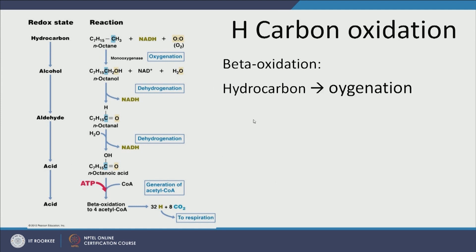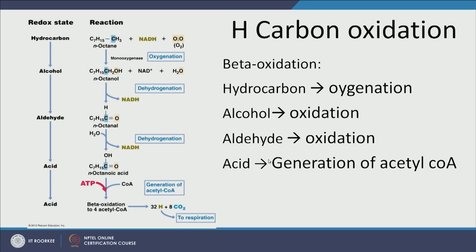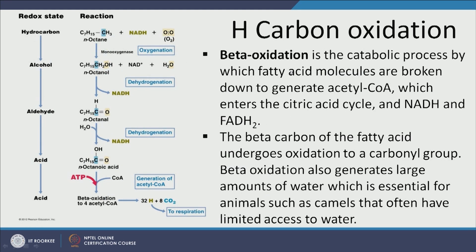Beta oxidation is the oxidation of a hydrocarbon to alcohol, then to aldehyde, then to acid, and finally to the generation of acetyl-CoA. It is a breakdown process in which fatty acids are broken to generate acetyl-CoA, which then enters the citric acid cycle. Beta oxidation generates a lot of water at each step, which is very beneficial for living beings in water-scarce conditions.